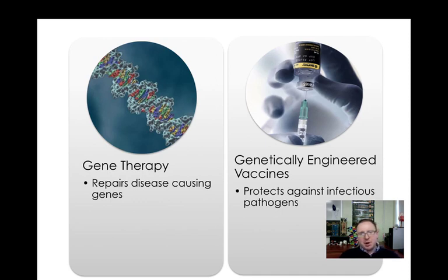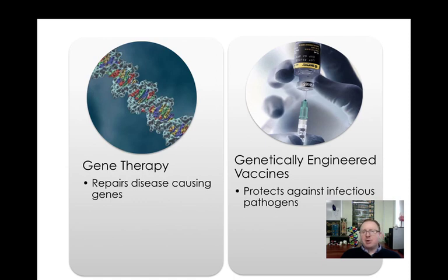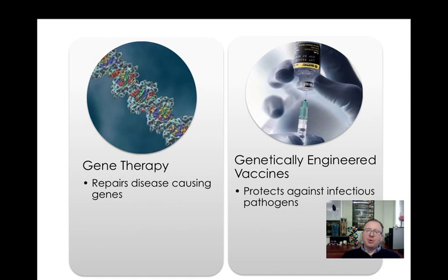There are two major ways: gene therapy and genetically engineered vaccines. Gene therapy is still very experimental and not quite ready for widespread use. Genetically engineered vaccines, on the other hand, have been used for quite a while. Gene therapy repairs disease-causing genes already inside of us — genes we're mostly born with. Genetically engineered vaccines protect against infectious pathogens like viruses or bacteria. Gene therapy repairs damaged disease genes, whereas vaccines stimulate the immune system to protect us against an external threat.